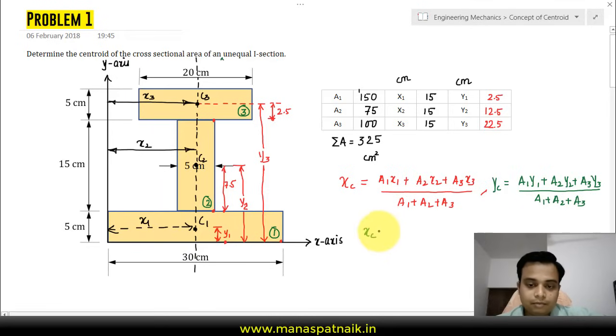When you put in all the values, this is exactly what you're going to get: xc will work out as 15 and yc will work out as 10.96, both of them in centimeters. That's exactly how the centroid of an unequal I section can be calculated, and that was pretty easy.